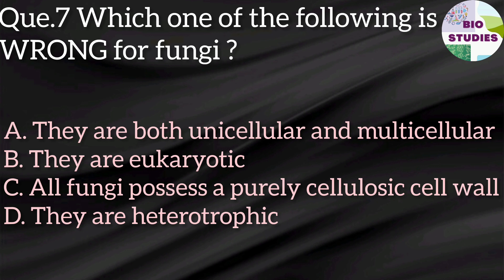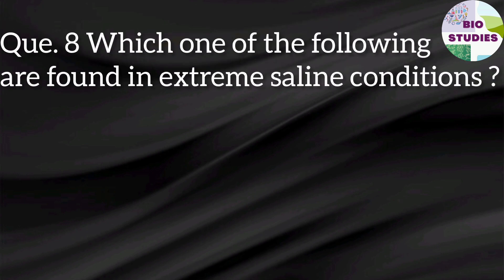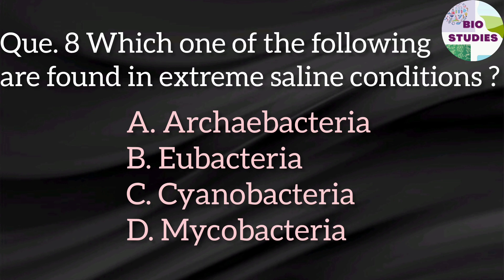Next question: which one of the following is wrong for fungi? This question asks for the wrong statement about fungi. Fungi are both unicellular and multicellular — this is correct. Eukaryotic — this is also correct. Cellulose cell wall — no, fungi cell wall is made up of chitin. So the wrong statement is the third option: purely cellulosic cell wall.